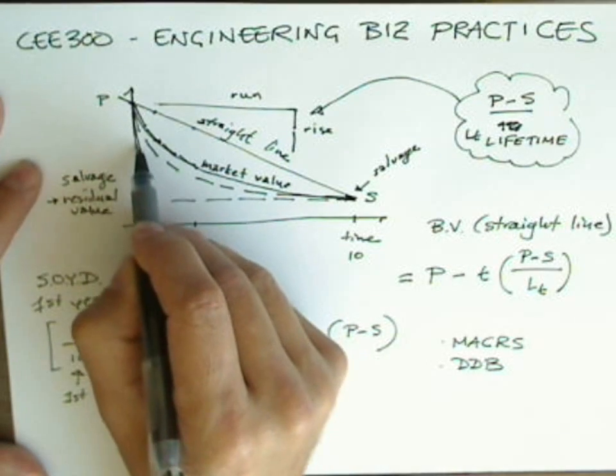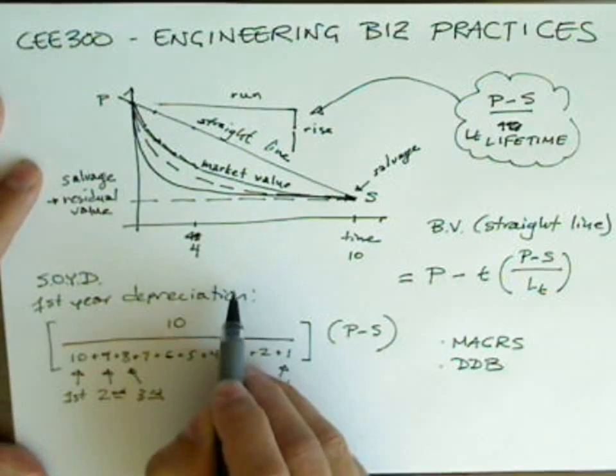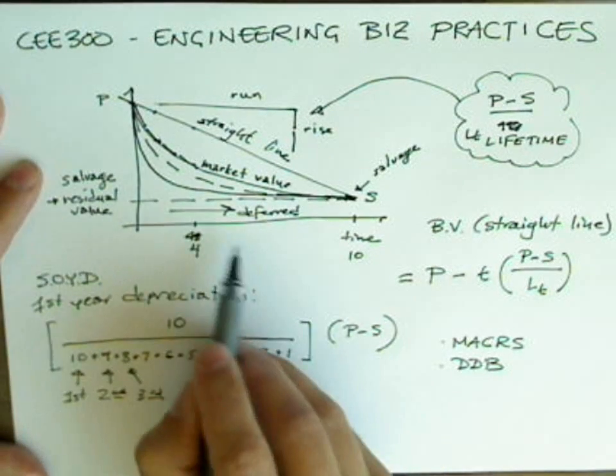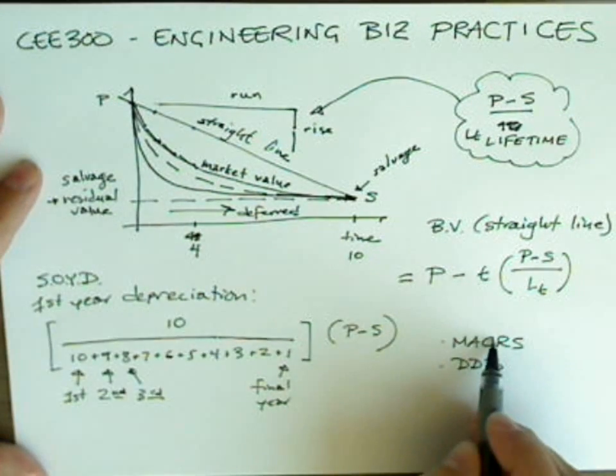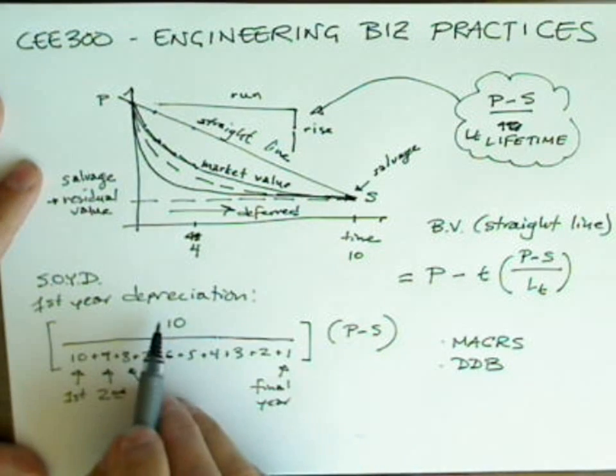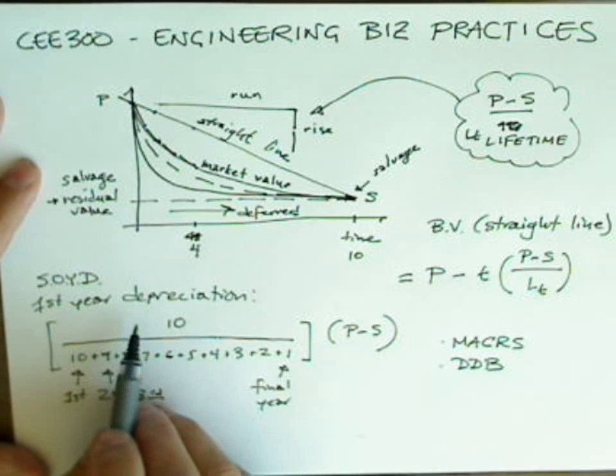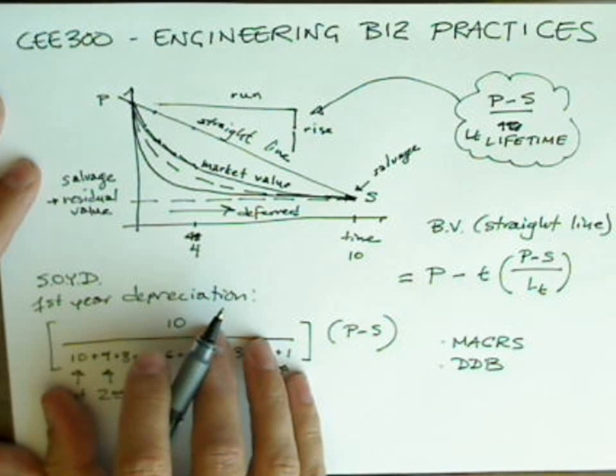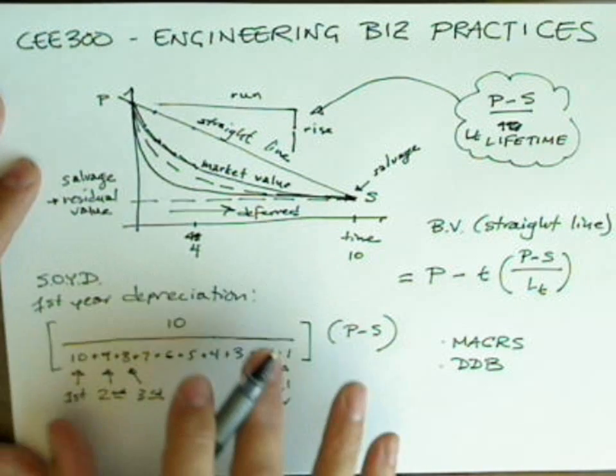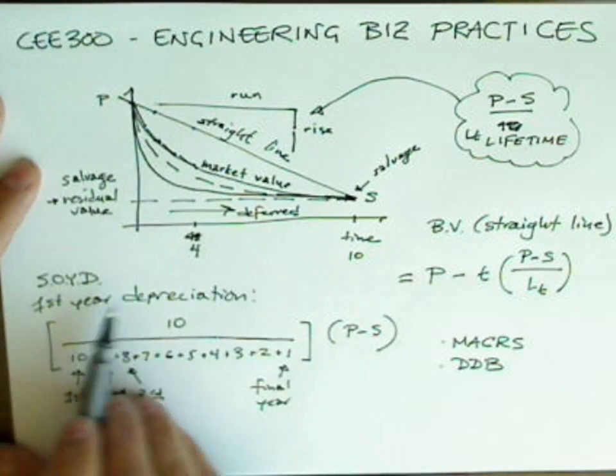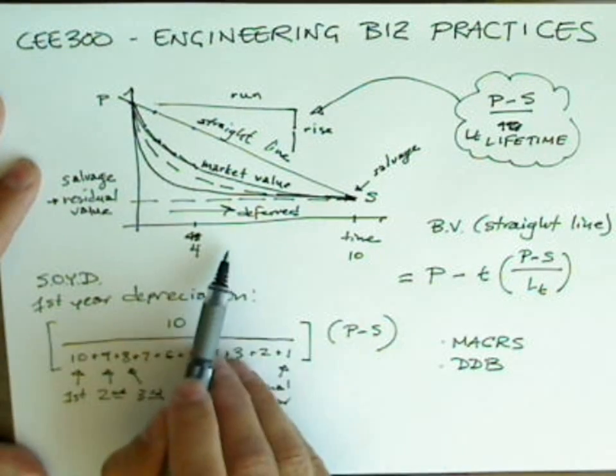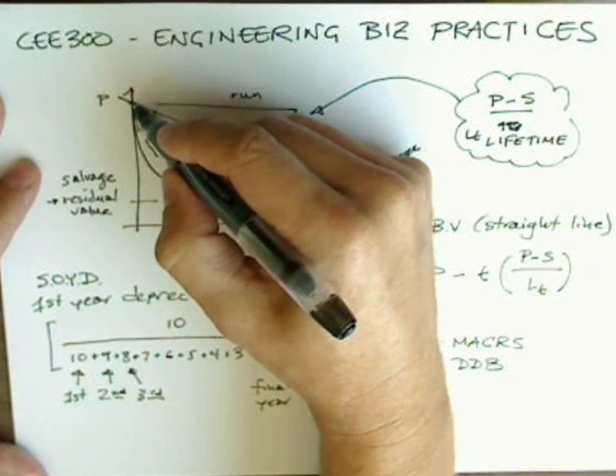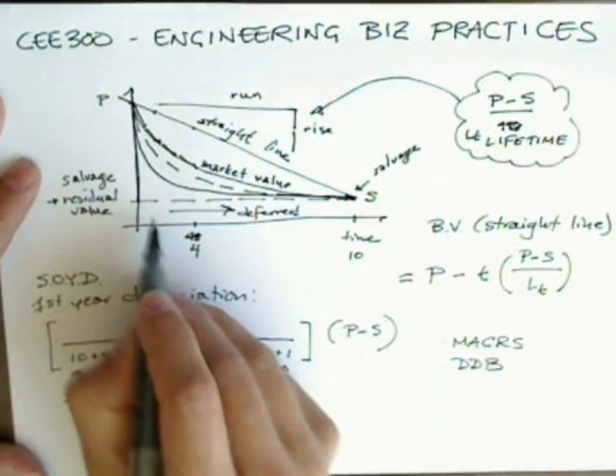The more accelerated the depreciation, the more deferred the tax payments. This is why part of the stimulus program was a policy that allowed small businesses to expense their capital improvements all in one year. Now that expired at the end of 2011, and sure enough, small businesses that made purchases of tangible assets, these are durable goods that intended to last a long time, that made purchases of tangible assets in 2011, were allowed to have a depreciation curve like this. Boom!